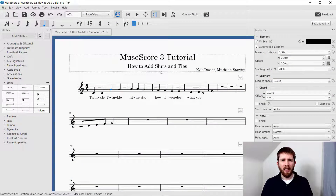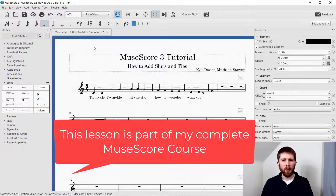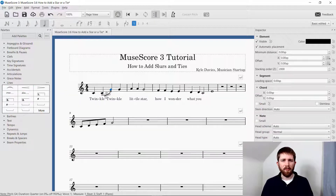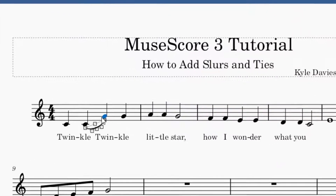You'll want to have MuseScore open, and I'm currently working on Twinkle Twinkle Little Star. A quick note on the difference between a tie and a slur: while they look identical — the same line is used — they are different. A slur is used between two different notes. The first note I had there was a middle C, and then I connected that to a G. That is a slur, and it's used to play a legato or connected sound where you connect the C to the G.